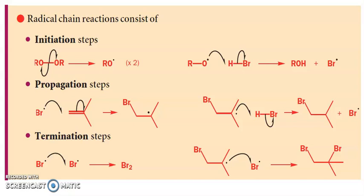The first step is the initiation step. You can see here this peroxide is breaking through homolytic cleavage and forming RO radicals. Now you see RO radicals react with HBr forming ROH and Br radicals.